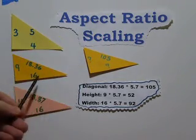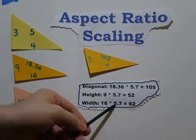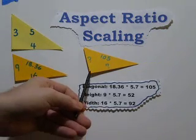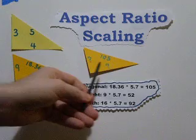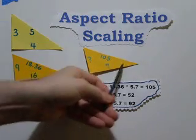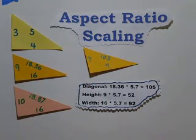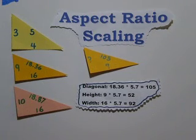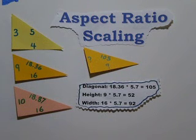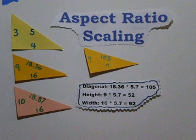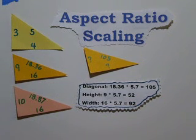The width value in the template is 16. 16 times 5.7 equals 92, so the width of this screen is 92 units. When I talk about units I mean either feet, inches, or millimeters. You can't mix metric units like millimeters with US units like feet or inches, because then all these numbers come out wrong.